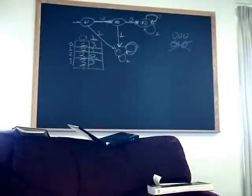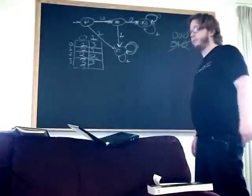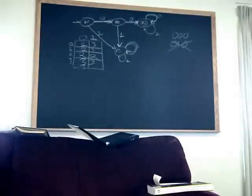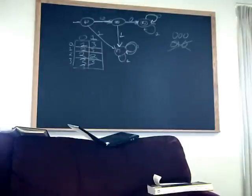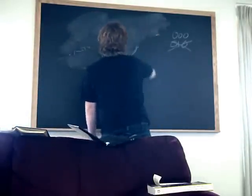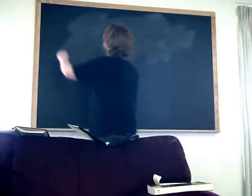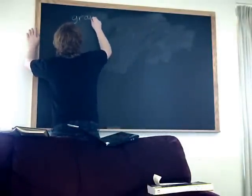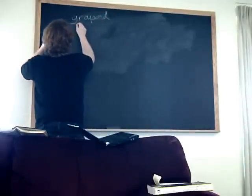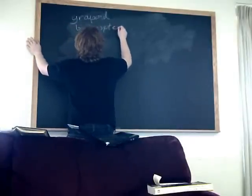I wanted to show the definitions of a semigroup, a semi-automaton, and a free semigroup. So, a semigroup is — for those of you who know what a group is, I'll just be reintroducing this — a groupoid, or a binary system, or a complete binary system, depending on who you talk to.